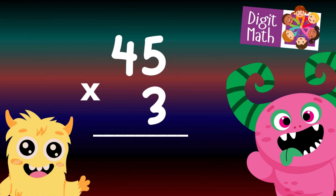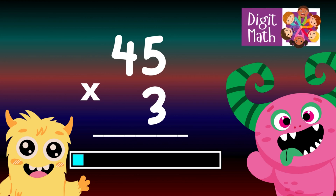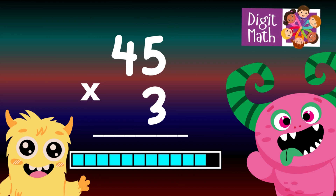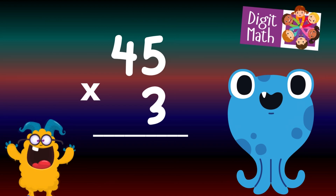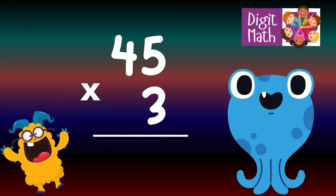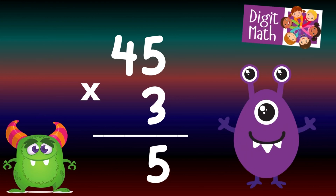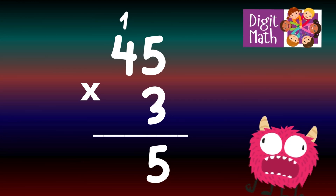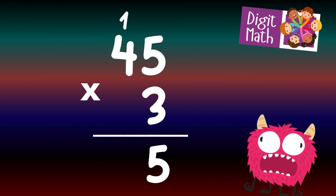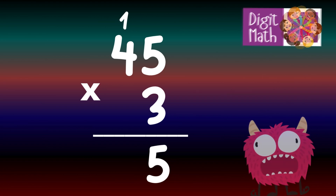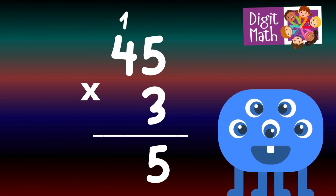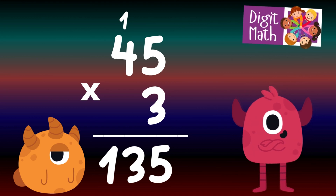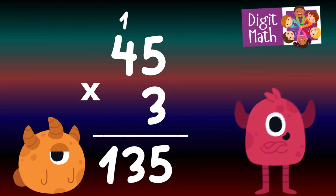45 times 3 — time to think. Let's go to the answer. To solve, multiply 45 by 3. In the Units column, multiply 5 by 3, which equals 15. Place 5 in the Units column and carry over 1 to the Tens column. In the Tens column, multiply 4 by 3, which equals 12. Add the carried over 1 to 12, making 13. Place 13 in the Tens and Hundreds column. So the final result is 45 times 3 equals 135.